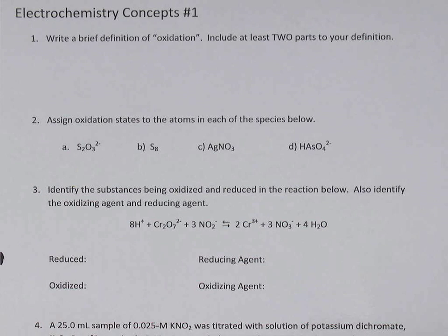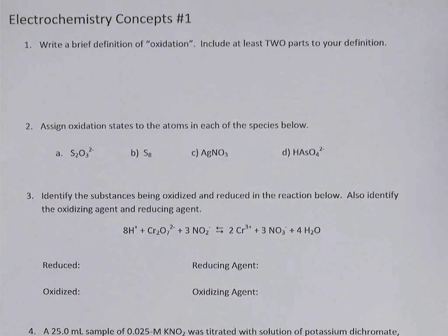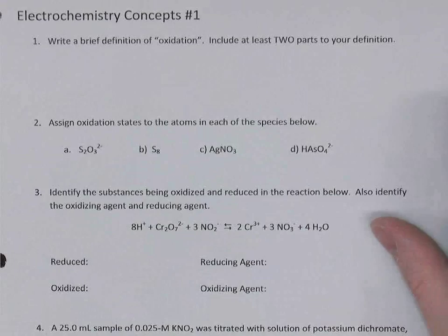In this video, we're going to take a look at the review sheet that was done in class. Electrochemistry concepts number one, intended to be a review of some introductory ideas in the new unit.